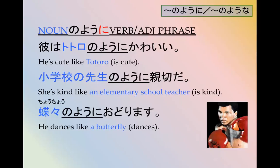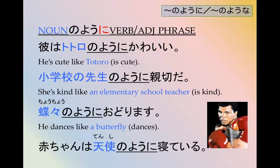The second part is either an adjective, an adjective type of noun, or a verb, an action phrase. 赤ちゃんは天使のように寝ている. The baby is sleeping like an angel. Like an angel sleeps.